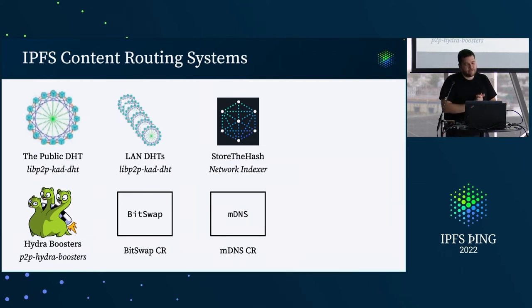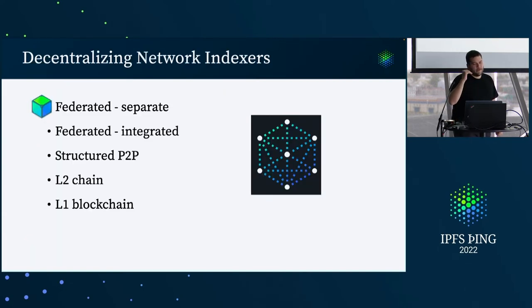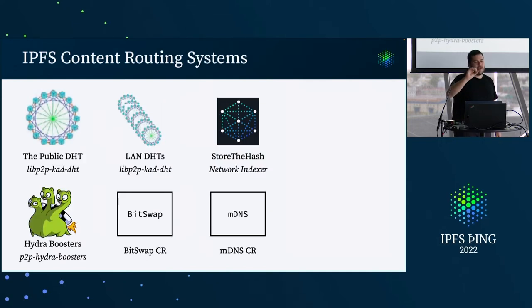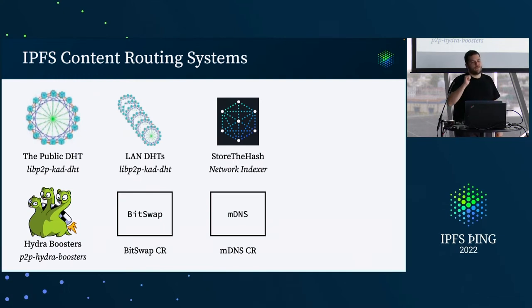The hash indexer you just heard about is one additional content routing system, and there will be many more — the community is going to experiment with a lot of tools over time. All these systems are optional and different groups connect to different systems for different reasons. We're still working on how to build composability into the system — how could you compose these into something that just works for most use cases. There are a lot of security, authentication, and privacy constraints in terms of where you want to ship your queries.